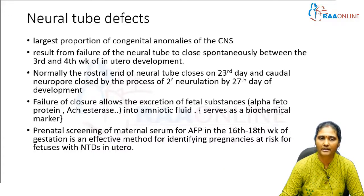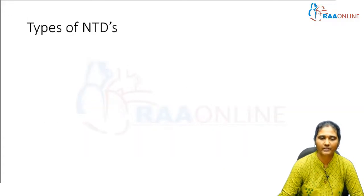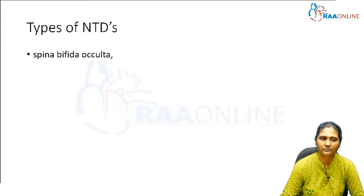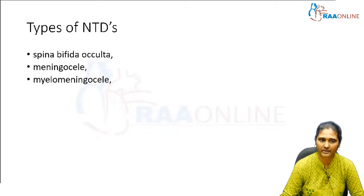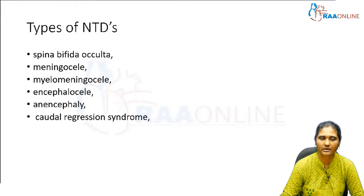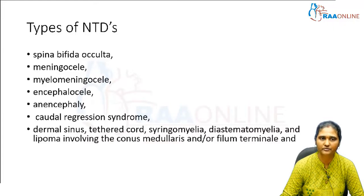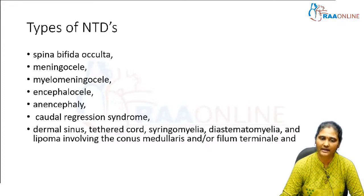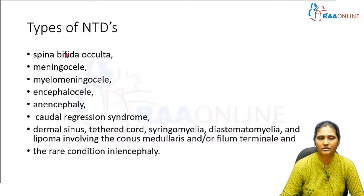The types of neural tube defects include: spina bifida occulta, meningocele, myelomeningocele, encephalocele, anencephalocele, caudal regression syndrome, and various others such as dermal sinus, tethered cord, syringomyelia, diastematomyelia, lipoma involving the conus medullaris and filum terminale, and the rare condition called iniencephaly.